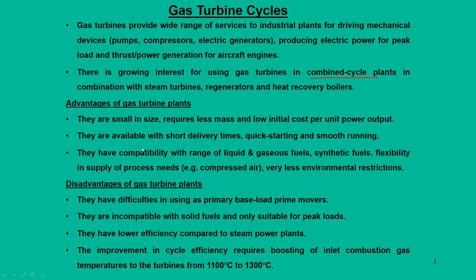Some of the advantages of gas turbine plants are that they are small in size, require less mass, and have low initial cost per unit power. They are available with short delivery times — once you start the engine, within a quick time it can start, and it also has smooth running compared to steam systems. They have compatibility with a wide range of liquid and gaseous fuels, including synthetic fuels, and flexibility for the supply of process needs. The compressed air can be tapped for wherever high pressure air is required.